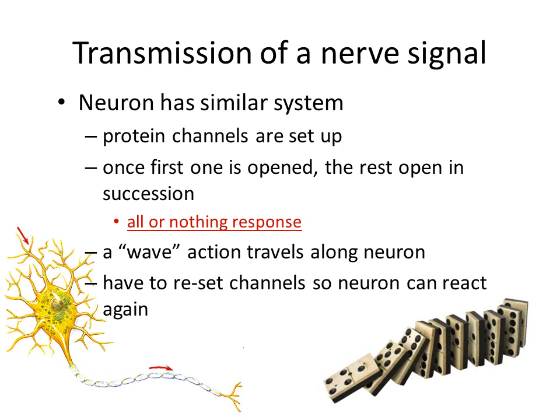Let's talk about the transmission of the nerve signal. Neurons have protein channels set up in the axons and dendrites, and these channels are going to be like the dominoes — they trigger the next channel to open so the transmission of the signal can go down the line. Once the first channel is open, the rest will open in succession. It is an all-or-nothing response: once you start the signal, you don't stop it midway. You cannot stop it midway — it is an all-or-nothing response to the stimulation. Once the impulse starts traveling down the neuron, you cannot stop it.